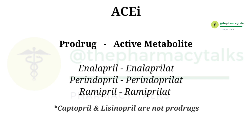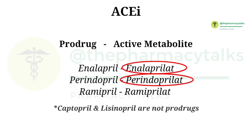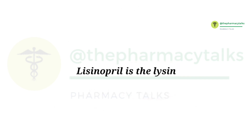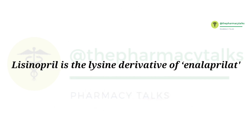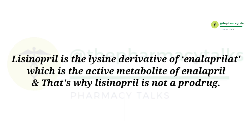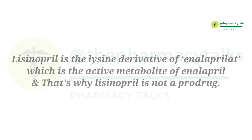The active forms of these pro-drugs are Enalaprilat, Perindoprilat, Ramiprilat, etc. Another amazing fact: Lisinopril is the lysine derivative of Enalaprilat, which is the active form of Enalapril, and that is why Lisinopril is not a pro-drug.